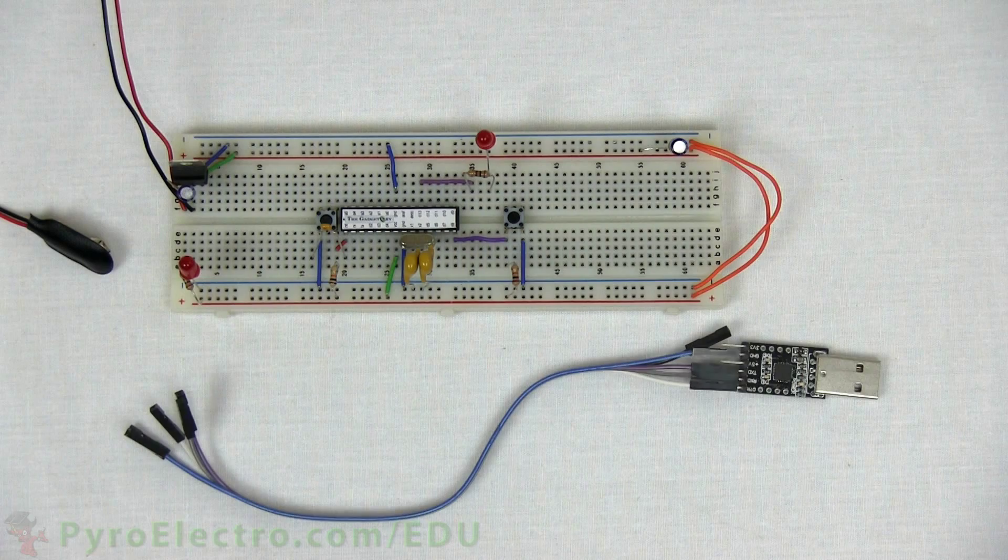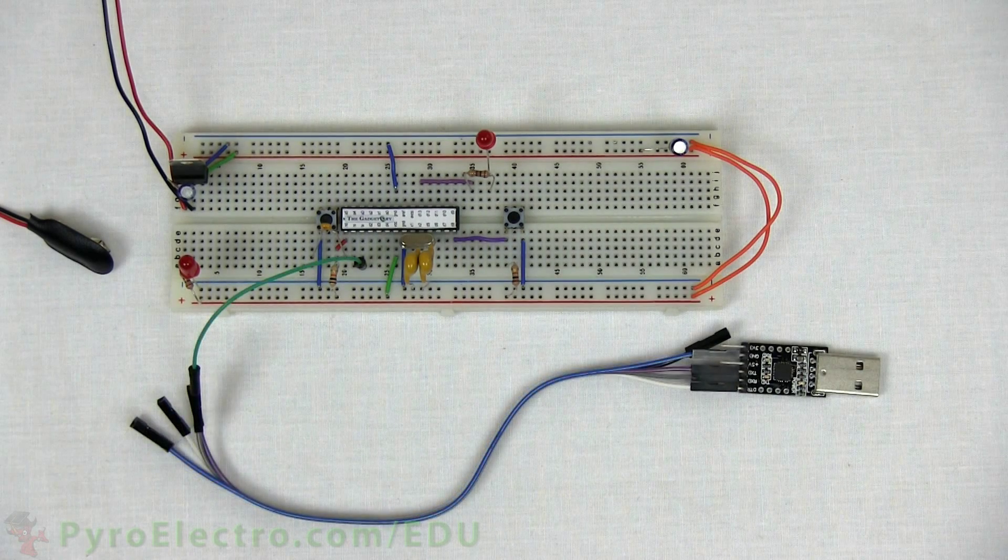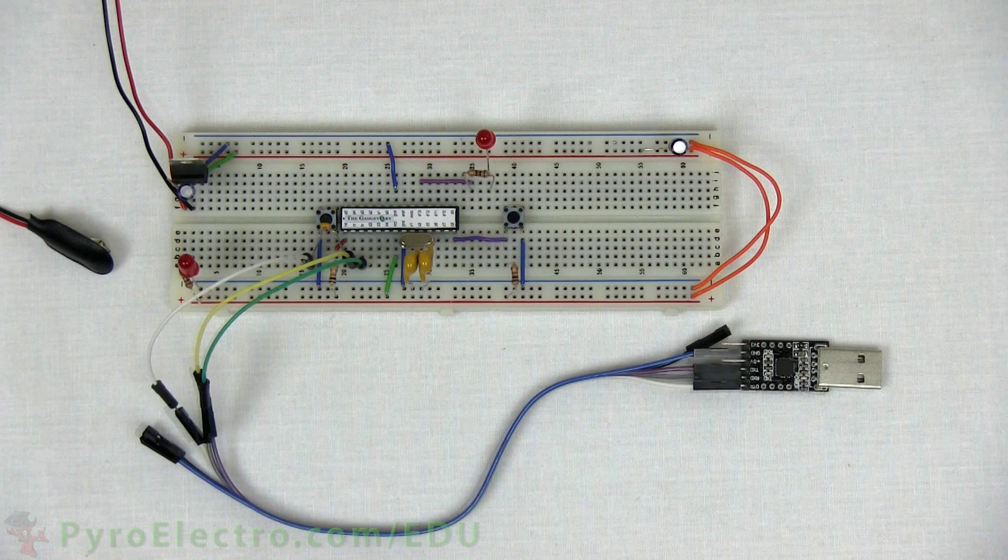And finally, we'll add the four jumper wires to connect the USB to serial converter to the circuit, so that we can program the microcontroller.